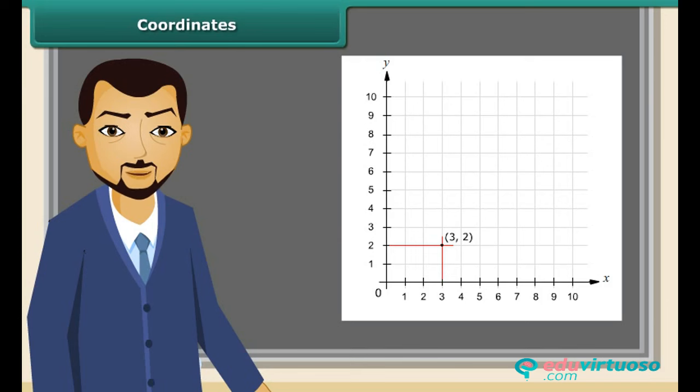In a graph sheet, we draw X and Y axes conveniently, and then fix the required point. 3 is called X coordinate of the point. 2 is the Y coordinate of the point. We say that the coordinates of the point are (3, 2). Always the first number indicates X coordinate, and the second number indicates Y coordinate.